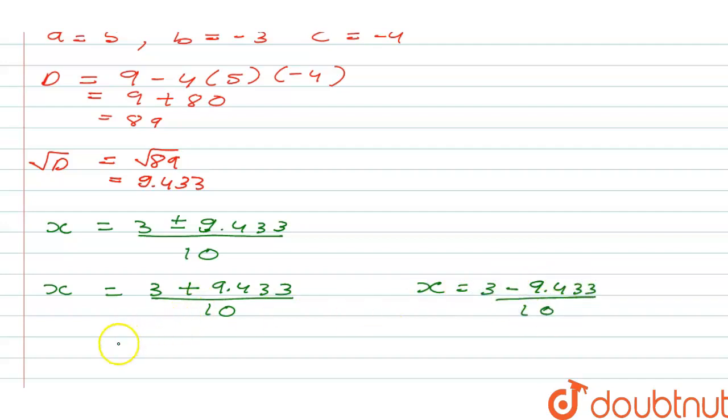So this is going to give us 12.433 by 10, and this is going to give us -6.433 by 10.